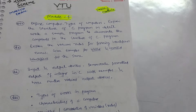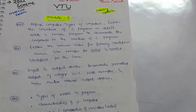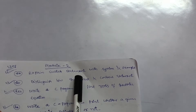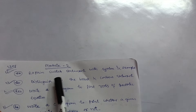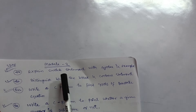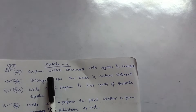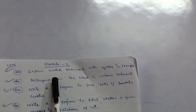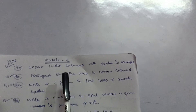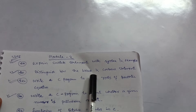In each and every module there are programs — at least 10 programs — but I have selected the most important ones. In Module 2, the super-important question is 'Explain the switch statement with syntax and example.' These statements are important especially for CSC students who will deal with them in future subjects. Next, distinguish between the break and continue statement.